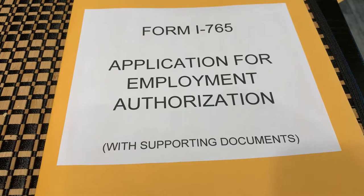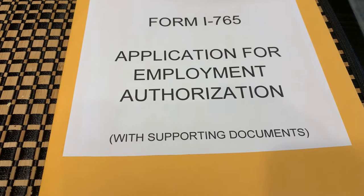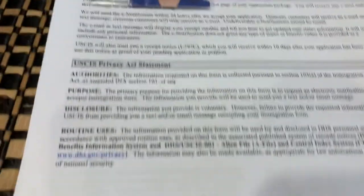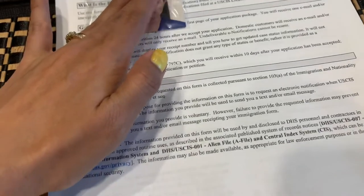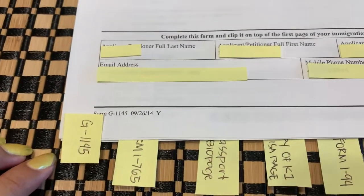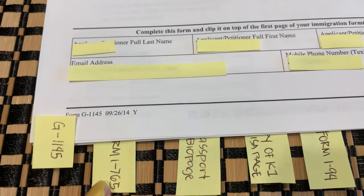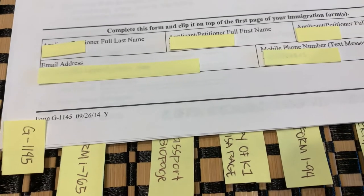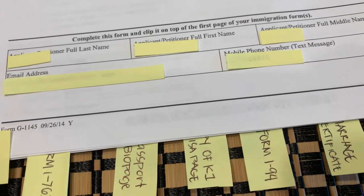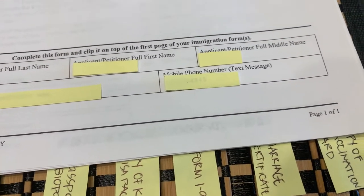So here I have four different folders. This is the contents of my Form I-765, or the Application for Employment Authorization, with supporting documents. First I put my two photos, then my G-1145, and the seven pages of Form I-765. I also attached my passport bio page, copy of my K-1 visa page, my Form I-94, our marriage certificate, and a copy of my vaccination card.